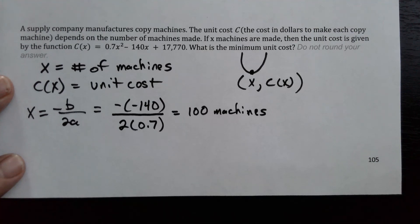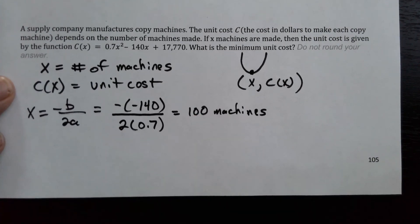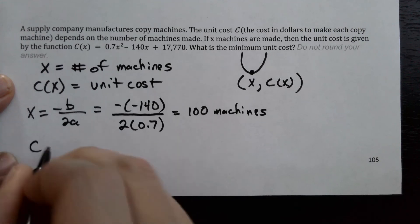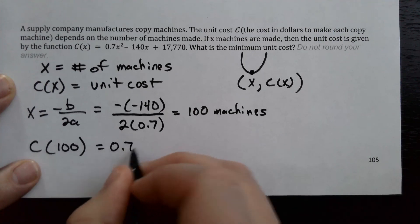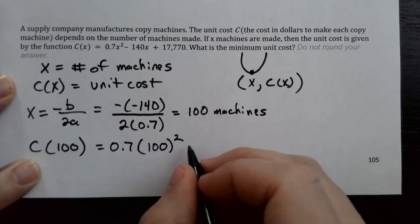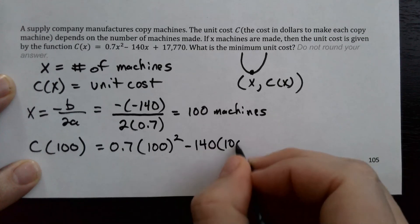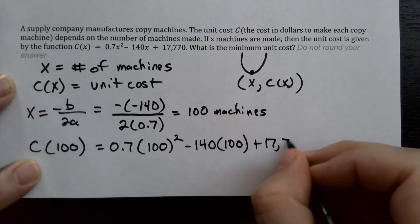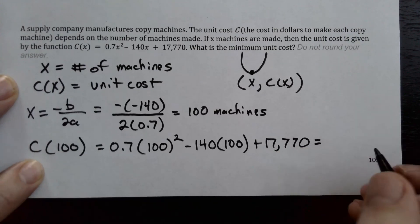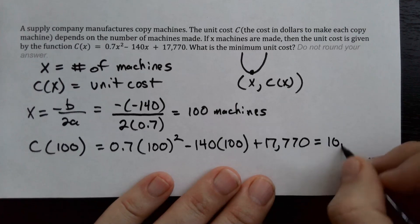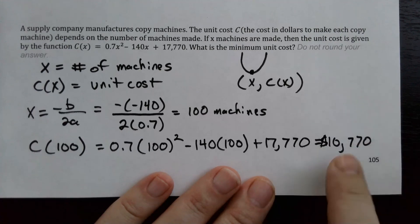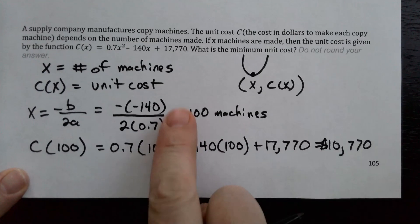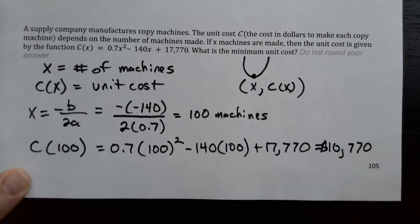Now we find what that minimum unit cost actually is by plugging 100 into the cost function: 0.7 times 100 squared minus 140 times 100 plus 17,770, which works out to $10,770. That is the minimum cost per machine when 100 machines are made.